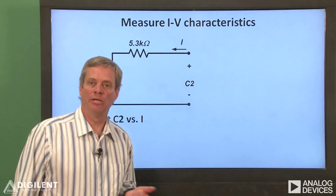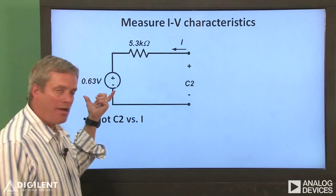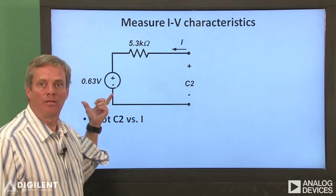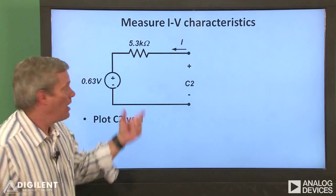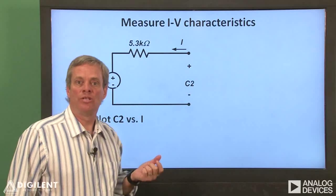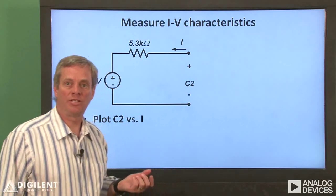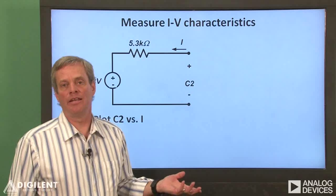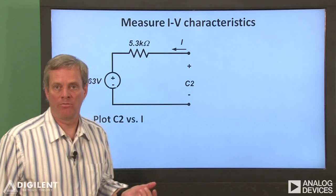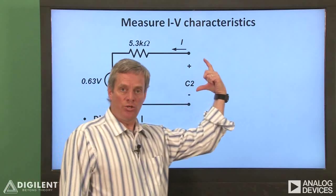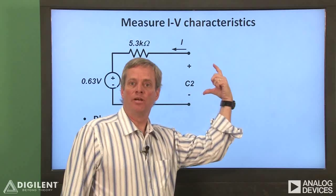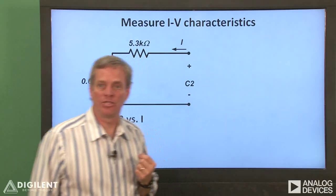Here's the Thevenin circuit as we will implement it. We'll use channel 1 of the waveform generator to create the 0.63 volt source. A potentiometer will be used to implement the 5.3 kilohm resistor simply to avoid creating a network of fixed resistors with the desired resistance. Channel 2 of our oscilloscope will be used to measure the voltage at the terminals of the Thevenin circuit.